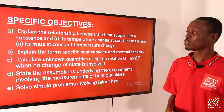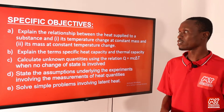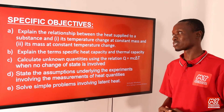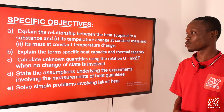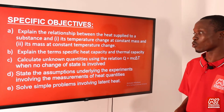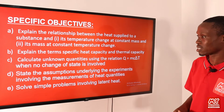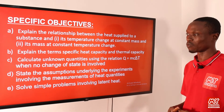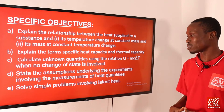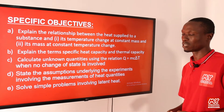Objective A: explain the relationship between the heat supplied to a substance and (i) its temperature change at constant mass, and (ii) its mass at constant temperature change. Objective B: explain the terms specific heat capacity and thermal capacity. Objective C: calculate unknown quantities using the relationship Q = mcΔT when no change of state is involved. Objective D: state the assumptions underlying experiments involving measurements of heat quantity. Objective E: solve simple problems involving latent heat.